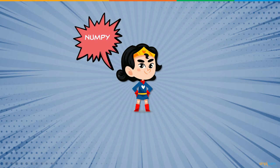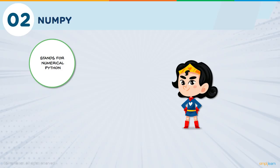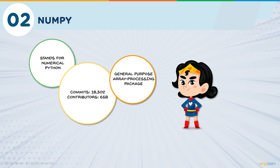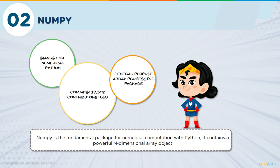Now let's talk about a common yet very powerful Python library called NumPy. NumPy is a fundamental package for numerical computation in Python — it stands for Numerical Python. It has around 18,000 commits on GitHub with an active community of 700 contributors. It's a general-purpose array processing package that provides high-performance multi-dimensional objects called arrays and tools for working with them. NumPy addresses the slowness problem by providing these multi-dimensional arrays and functions and operators that operate efficiently on them.